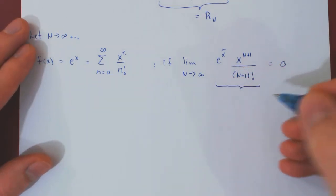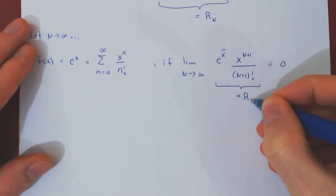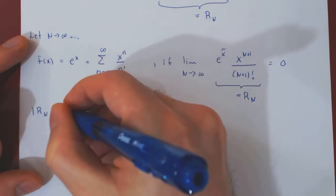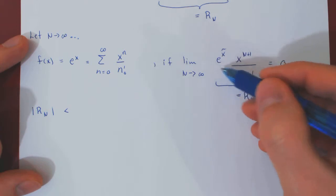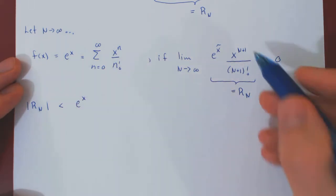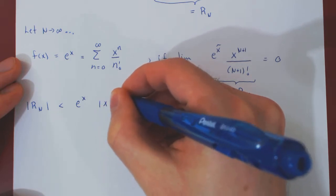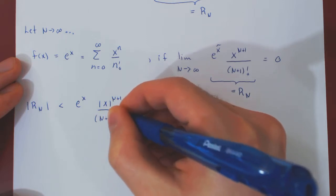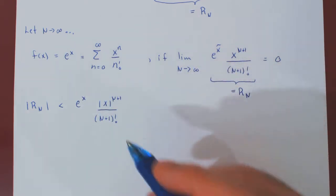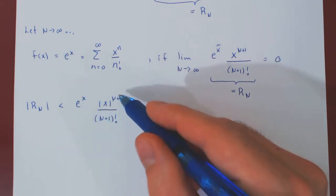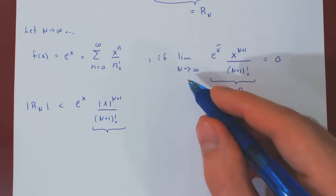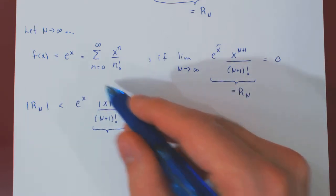Taking the absolute value of the remainder Rn, we have that |Rn| is less than e to the x times |x to the n+1| over n+1 factorial. The key is that e to the x is a constant with respect to n, since x does not depend on n. So we can ignore this constant multiple, and if we can show that |x|^{n+1} over (n+1)! shrinks to 0 as n tends to infinity, then any multiple of a sequence converging to 0 will also converge to 0.